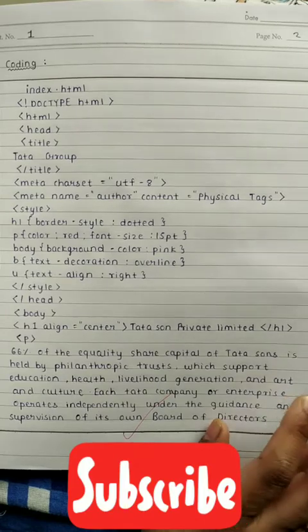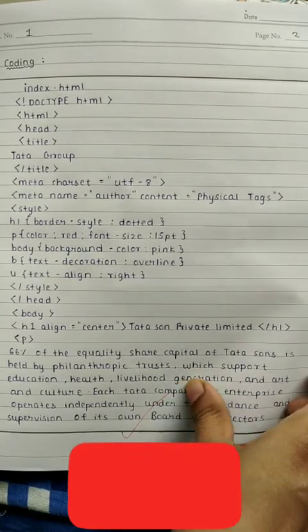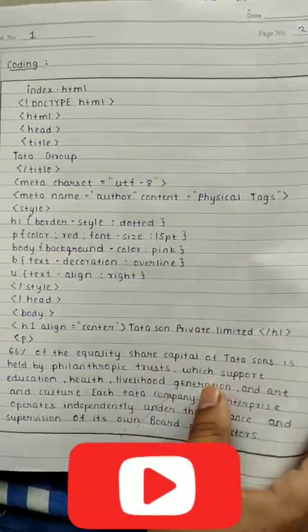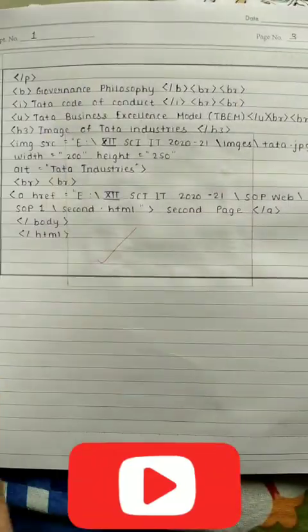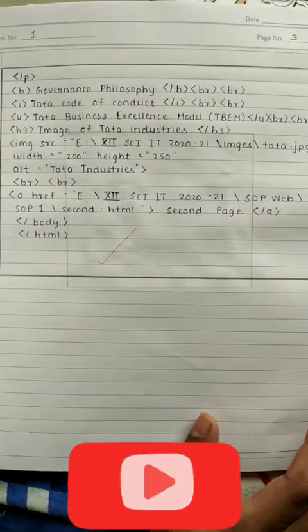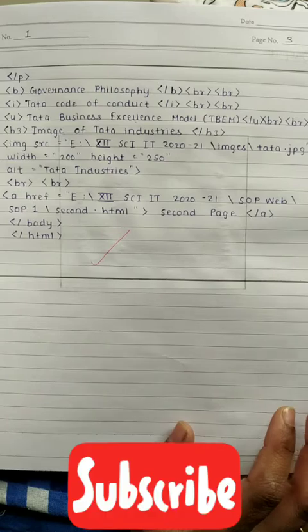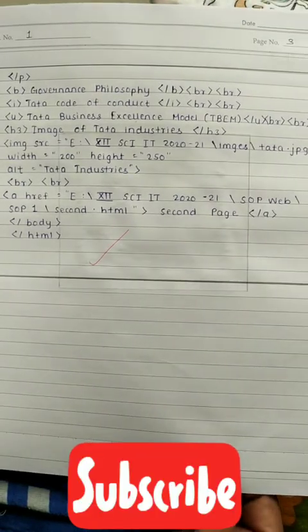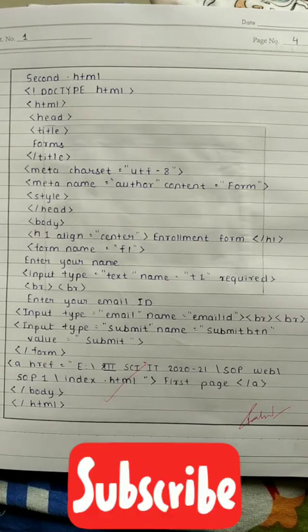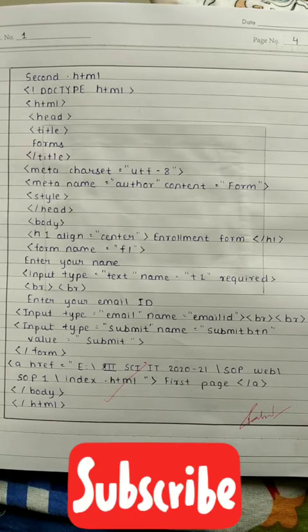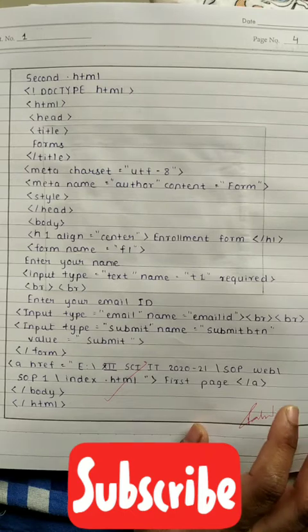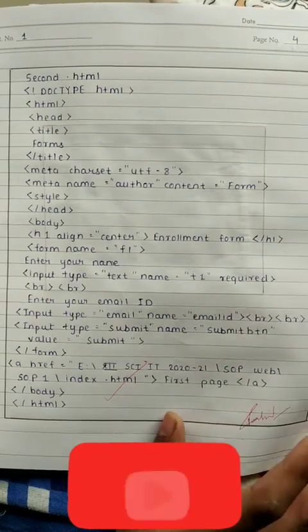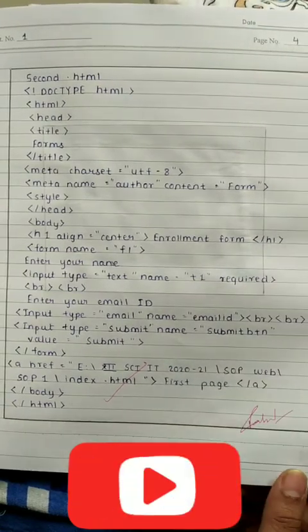This is how you are going to write the program for SOP first, and then you need to write a second HTML program. There are two files: first is first dot HTML and next is second dot HTML.